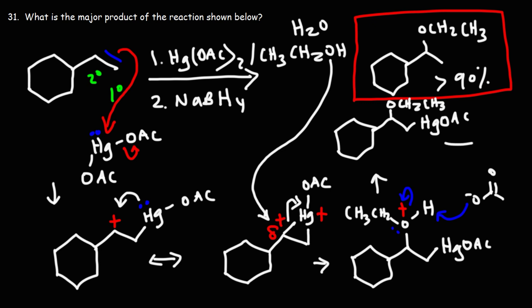Now, to get to this product here, we need to move to the second step, sodium borohydride. Now, certain textbooks mention that there's evidence that this can be a radical reaction. So we're not really going to go over the mechanism for the second part. But what you need to know is that the mercury acetate is going to be replaced with a hydrogen atom, and sodium borohydride is going to be helpful with that.